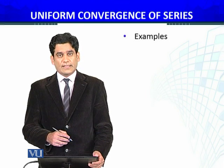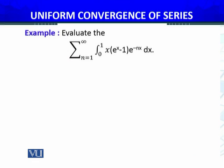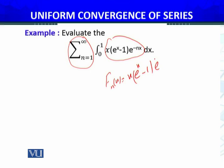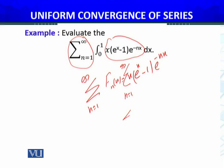So once again we are going to discuss another example which states: evaluate this integral. So first of all, f_n(x) = x · e^(x-1) · e^(-nx). Now the sequence of partial sums — summation n equals 1 to infinity — the sequence of partial sum S_k equals summation k equals 1 to n of x · e^(x-1) · e^(-nx).